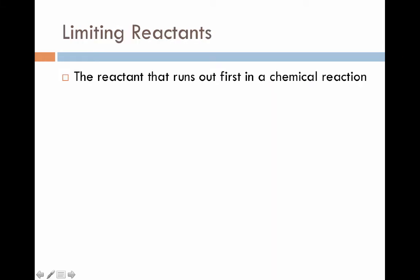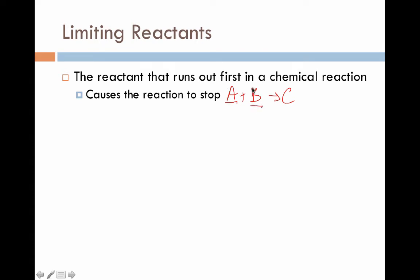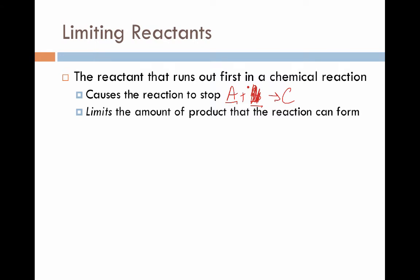A limiting reactant is the reactant in a chemical reaction that runs out first, and it's important to identify this because it establishes a couple of key ideas. When the first chemical runs out, the chemical reaction has to stop. If we have reaction A + B → C, we need both A and B present to make our new substance. As soon as any one of these is gone, the reaction necessarily stops. Whatever chemical runs out first — in this case B — is going to limit how much chemical C can be formed. We still have leftover A, but it doesn't matter because we have no B to react it with.